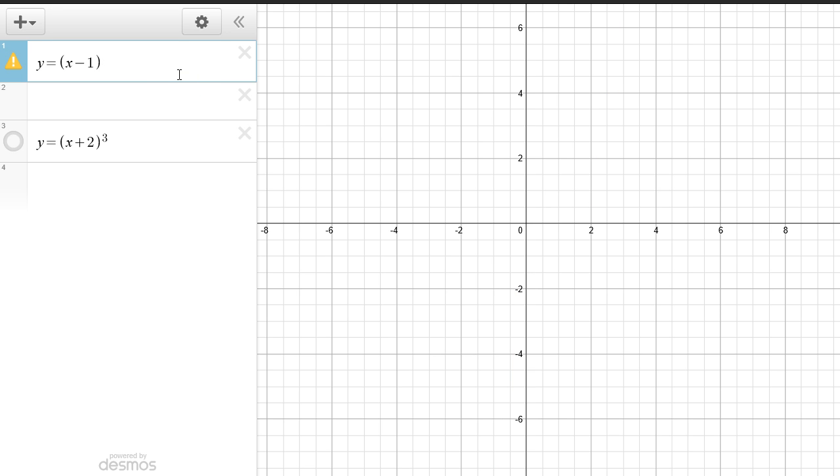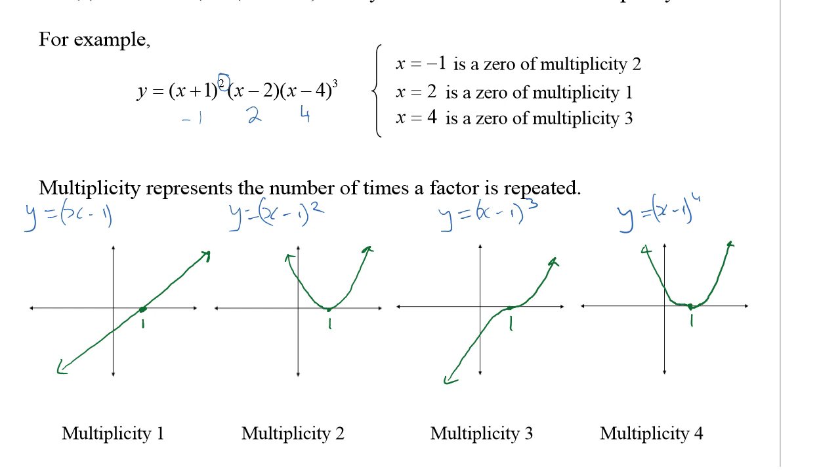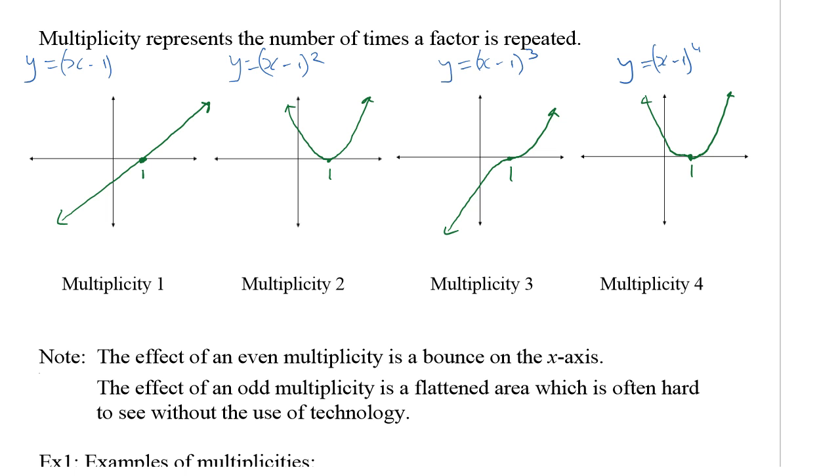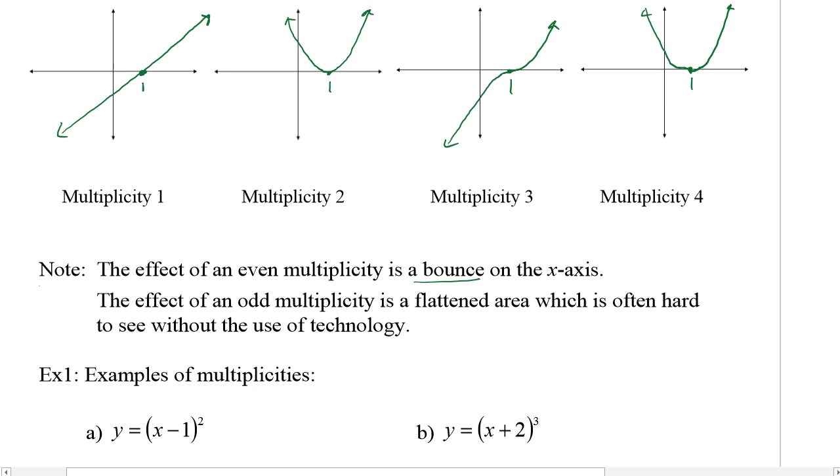Now we'll change it to the 4th power. It looks a lot like y = (x-1) squared, except this part kind of gets flattened out. You can probably guess what happens if we go to the 5th power. Again, it's got that inflection point. What happens if we go to the 6th power? You see this pattern repeats between the odd and the even.